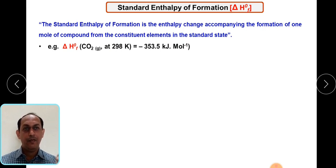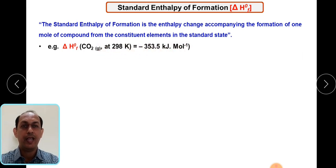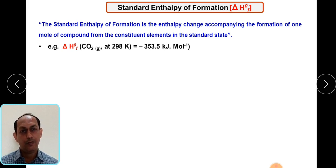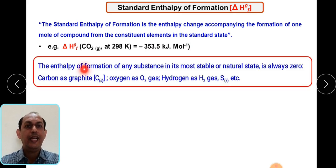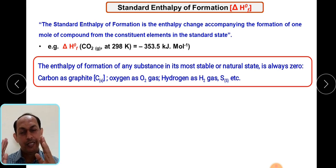The enthalpy of formation is denoted by delta H°f, where F stands for formation. For example, for CO₂ at 298 K, delta H°f equals minus 393.5 kJ/mol. This is the heat of formation for carbon dioxide gas when it is formed at 298 K (25°C) and one atmosphere or one bar pressure. The enthalpy of formation of a substance in its most stable or natural state is always considered as zero.